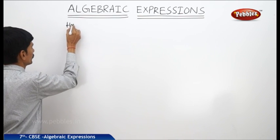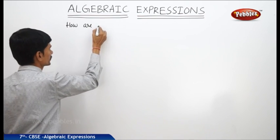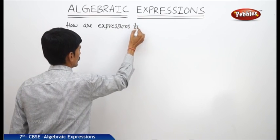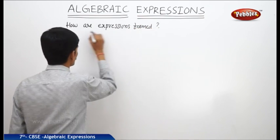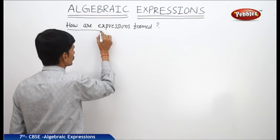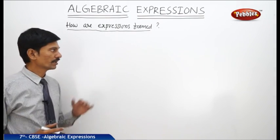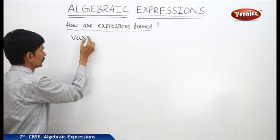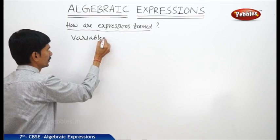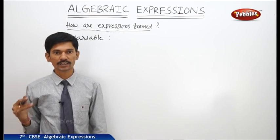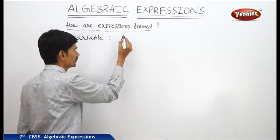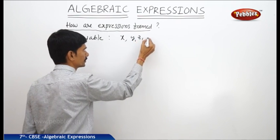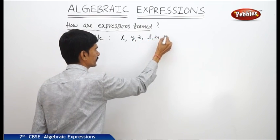How are algebraic expressions formed? Before going to start this, let us see what is a variable and what is a constant. First, what is a variable? A variable can take any value from a given set. For example, the variables are denoted by the lower case letters x, y, z or l, m, n.